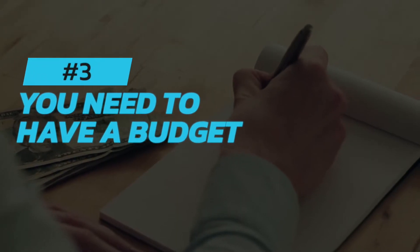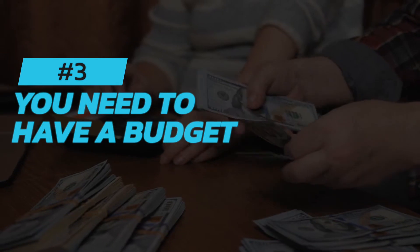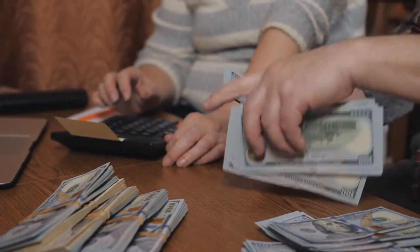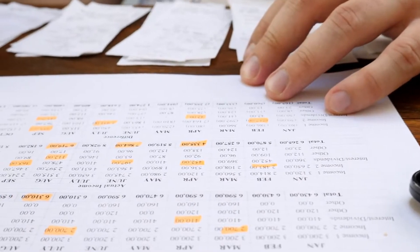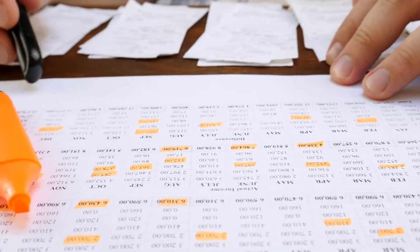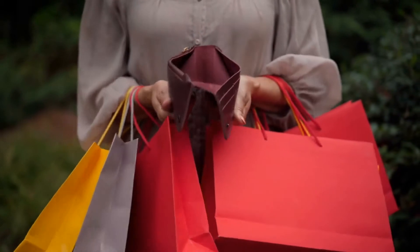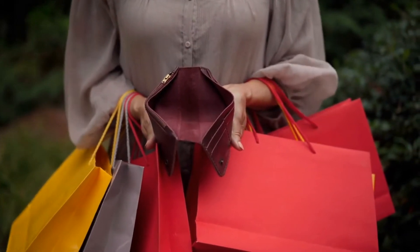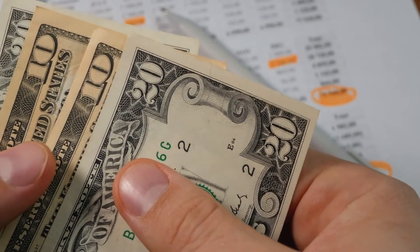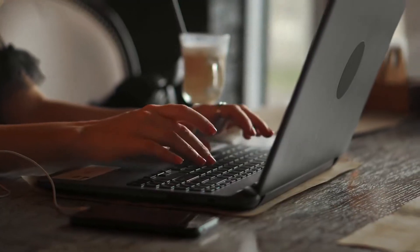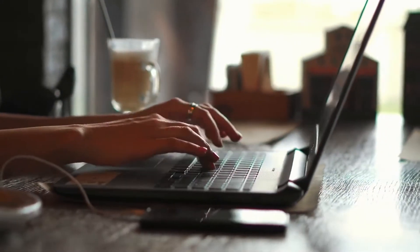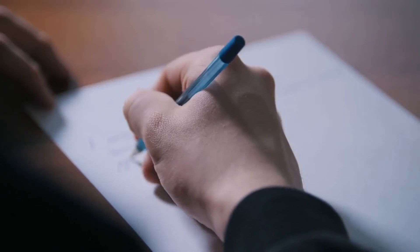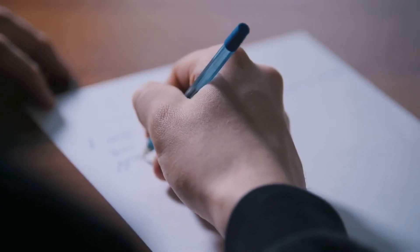Number three: You need to have a budget. A budget is a key tool in taking control of your finances. It allows you to track your income and expenses so you can see where your money is going. Without a budget, it's easy to overspend and get into debt. Creating a budget doesn't have to be difficult. There are plenty of online tools and apps that can help you get started. We love to use pen and paper. That's old school but it works for us.